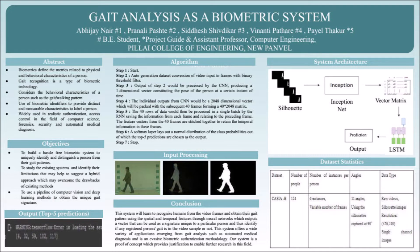The algorithm used here is exactly what the architecture is depicting. We start with video frames converted into silhouettes, then pass them to Inception Net to extract features of each frame and stack them vertically. We use 40 frames by setting an offset time and skipping frames so that the problem of occlusion is solved and simultaneously we get a complete gait cycle. The resultant is a 40 by 2048 matrix which is passed to the LSTM model, which identifies the temporal relation between frames and outputs a prediction — a probability distribution from which we extract the top 5 classes.